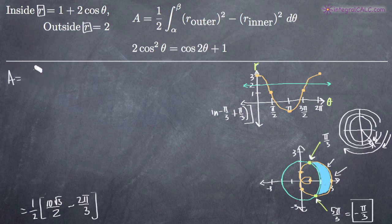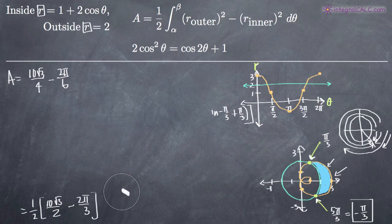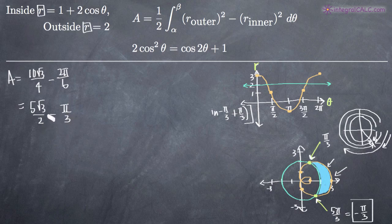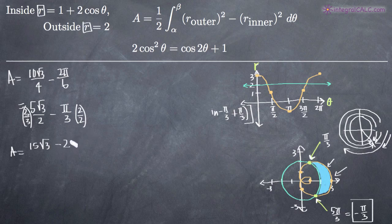Multiplying out the one half gives 10 times square root of 3 over 4 minus 2 pi over 6. Reducing both fractions by dividing through by 2 gives 5 times square root of 3 over 2 minus pi over 3. Finding a common denominator of 6 by multiplying the first fraction by 3 over 3 and the second by 2 over 2, we get 15 times square root of 3 over 6 minus 2 pi over 6. Our final answer is 15 times the square root of 3 minus 2 pi, all over 6.